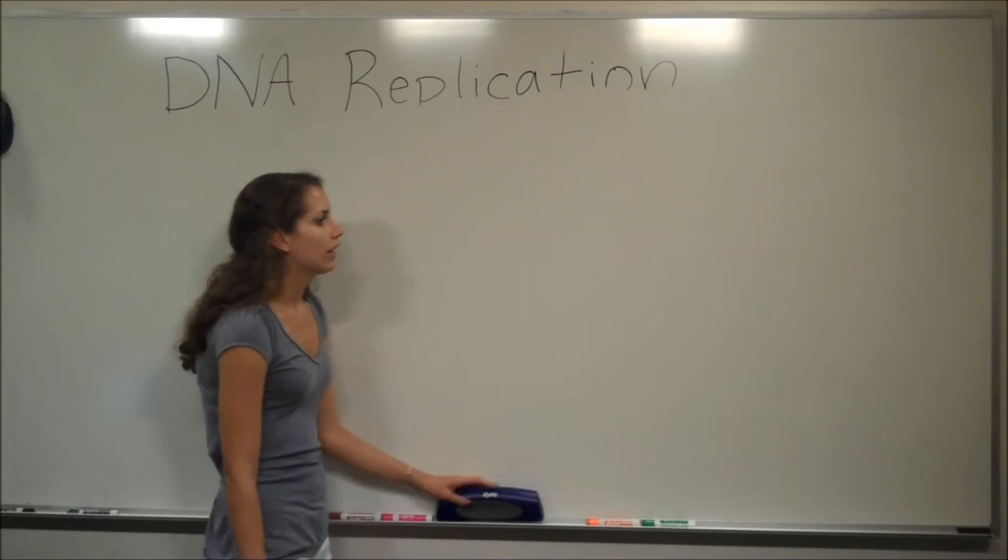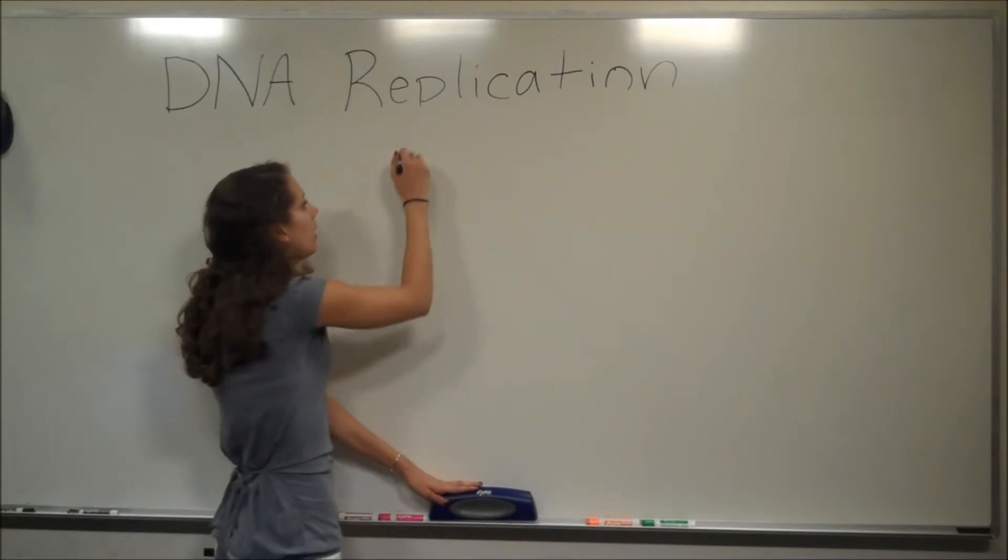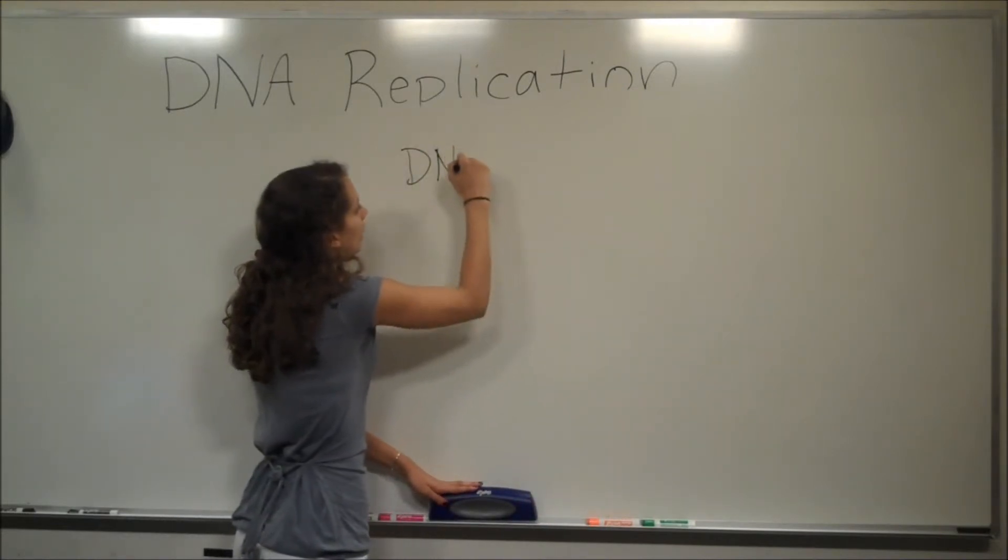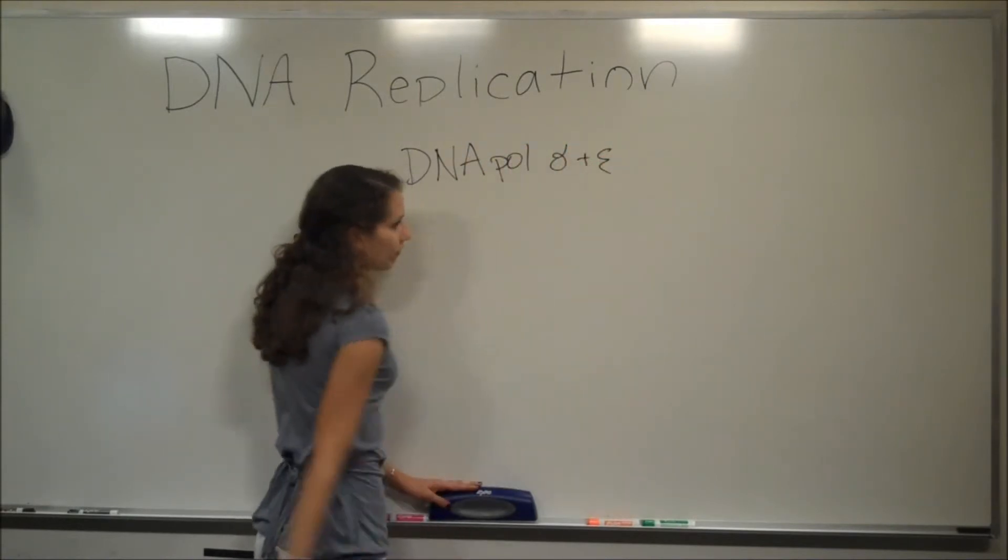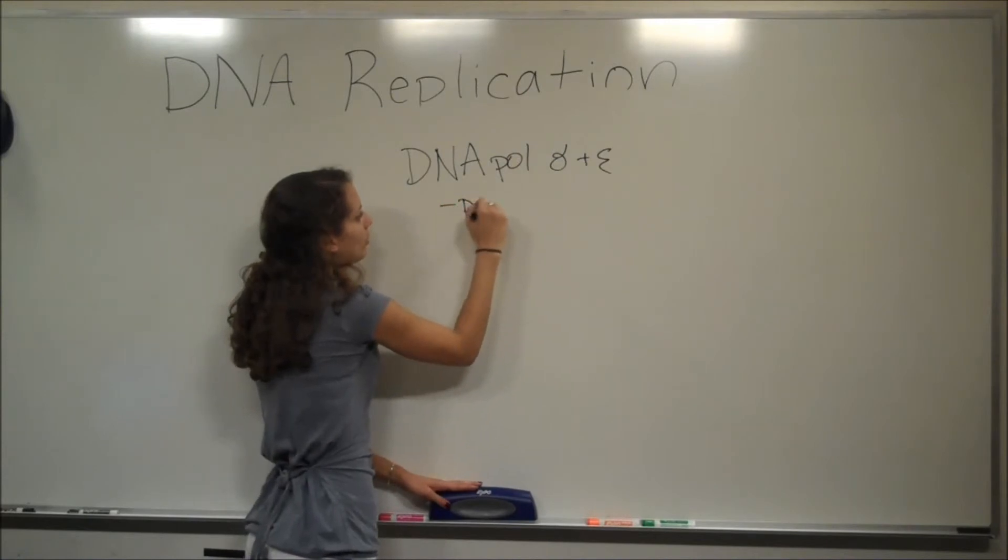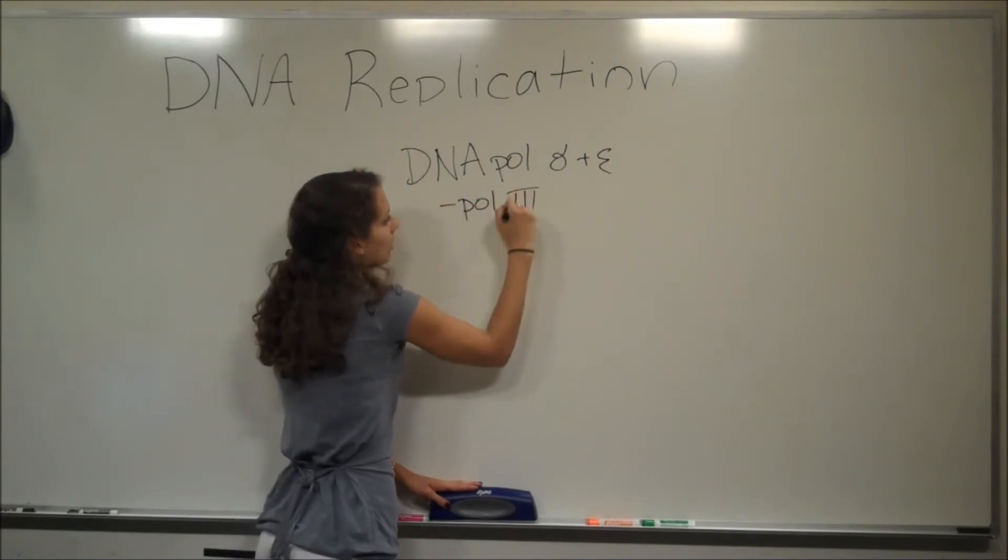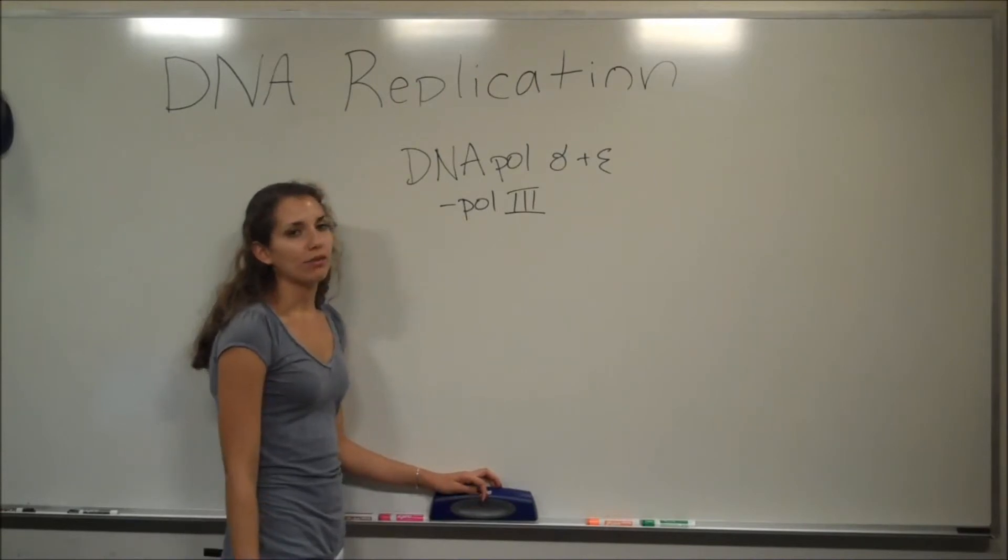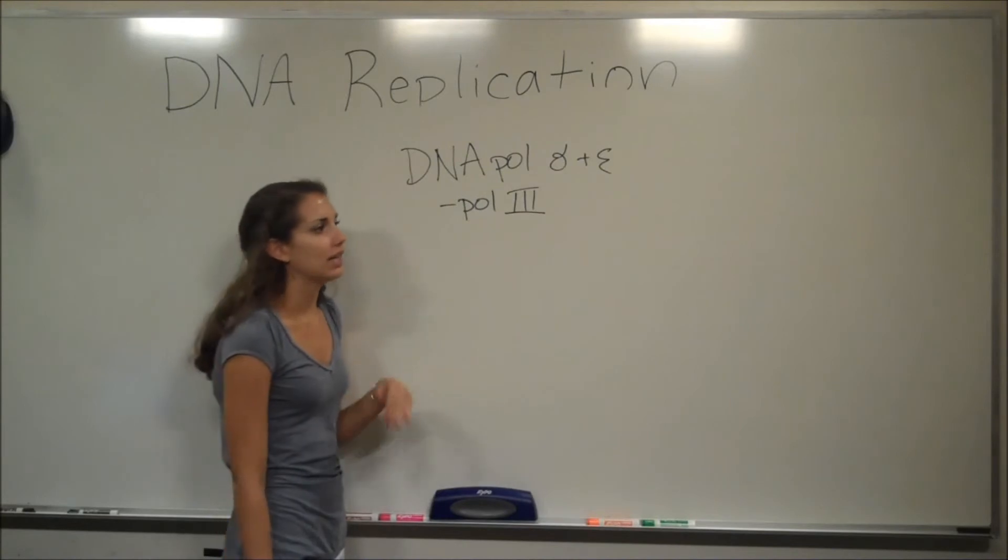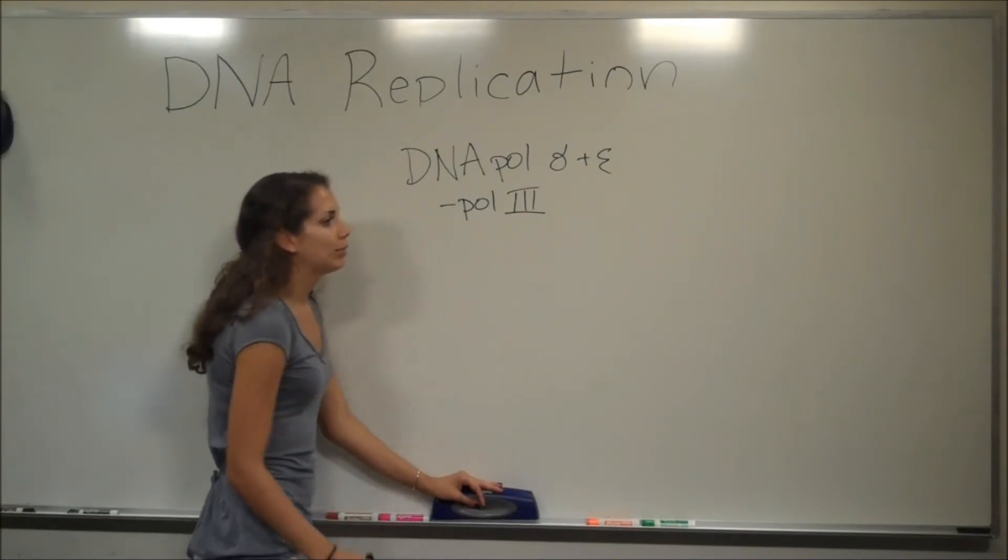So first of all, there are different DNA polymerases. Two that are in eukaryotes are DNA polymerase delta and epsilon. And this is most similar to DNA polymerase 3 in prokaryotes, because it has the 3' to 5' exonuclease activity. The delta and epsilon do, which I know I keep talking about. It's pretty important.